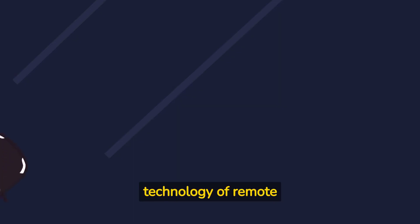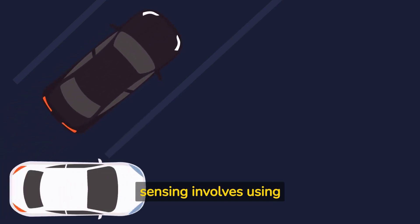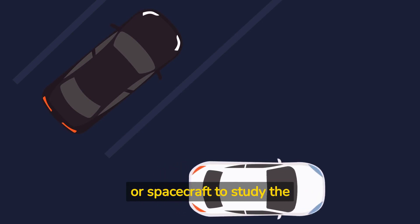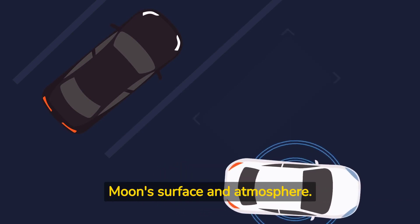Lastly, we have the technology of remote sensing. Remote sensing involves using sensors and instruments from orbit or spacecraft to study the moon's surface and atmosphere.